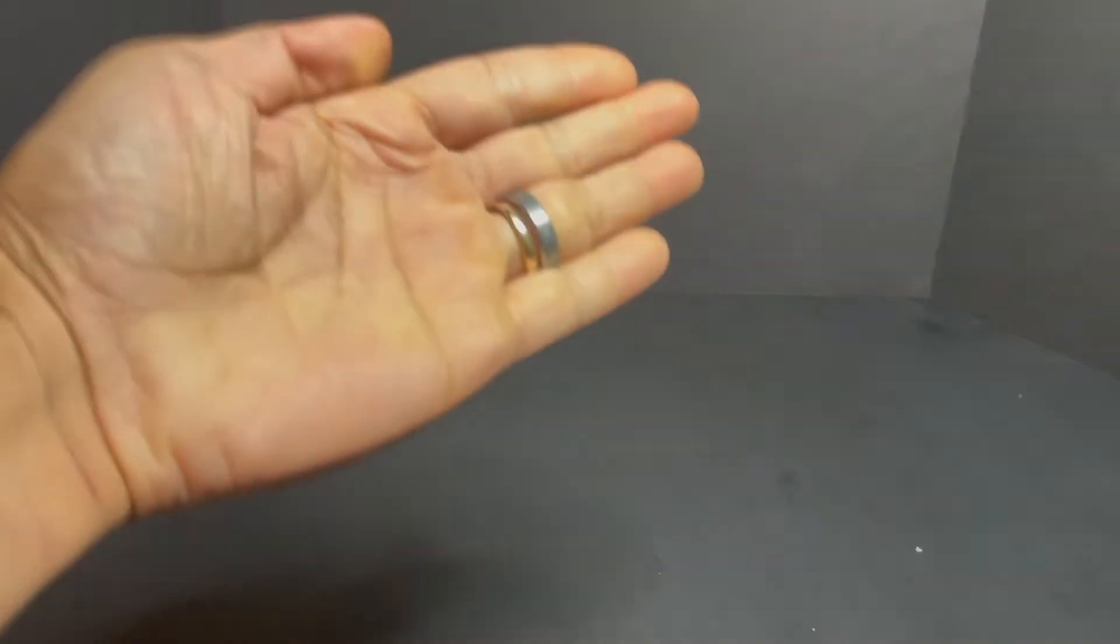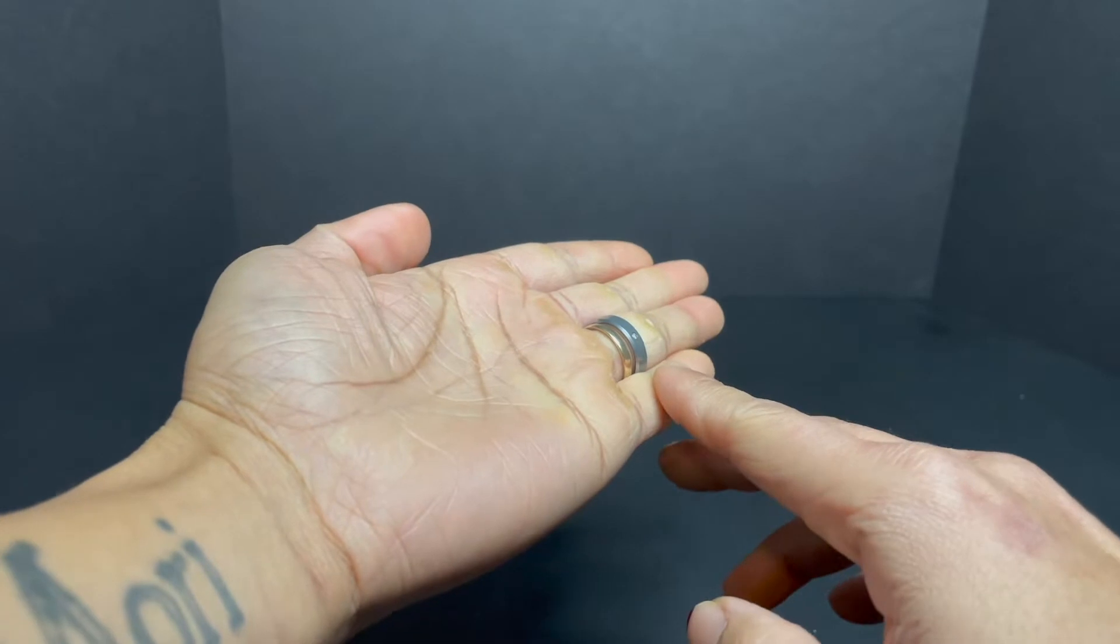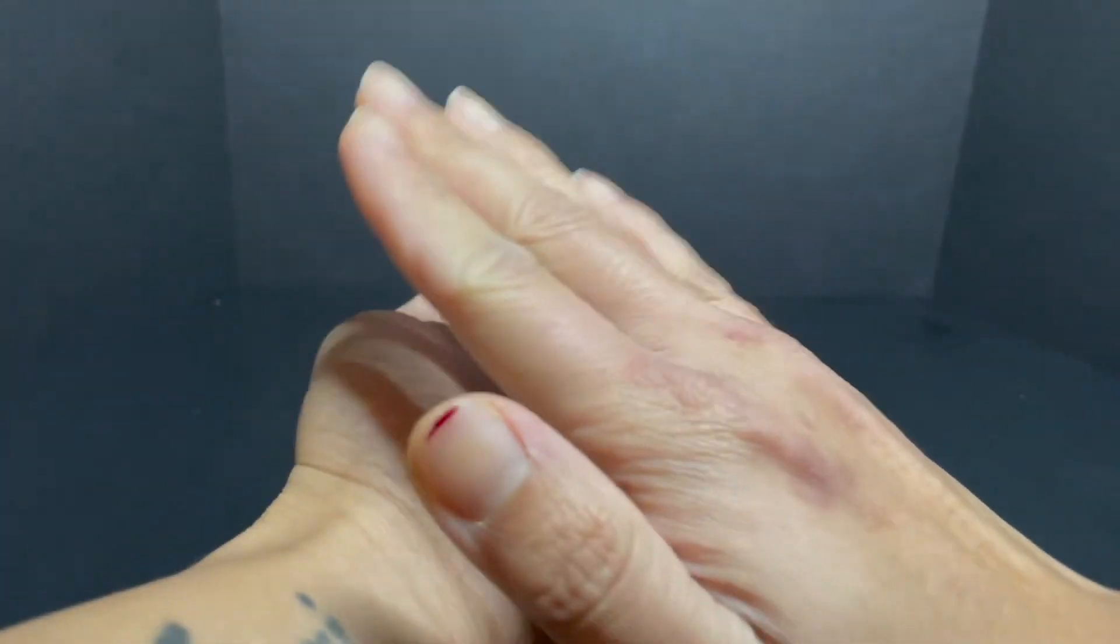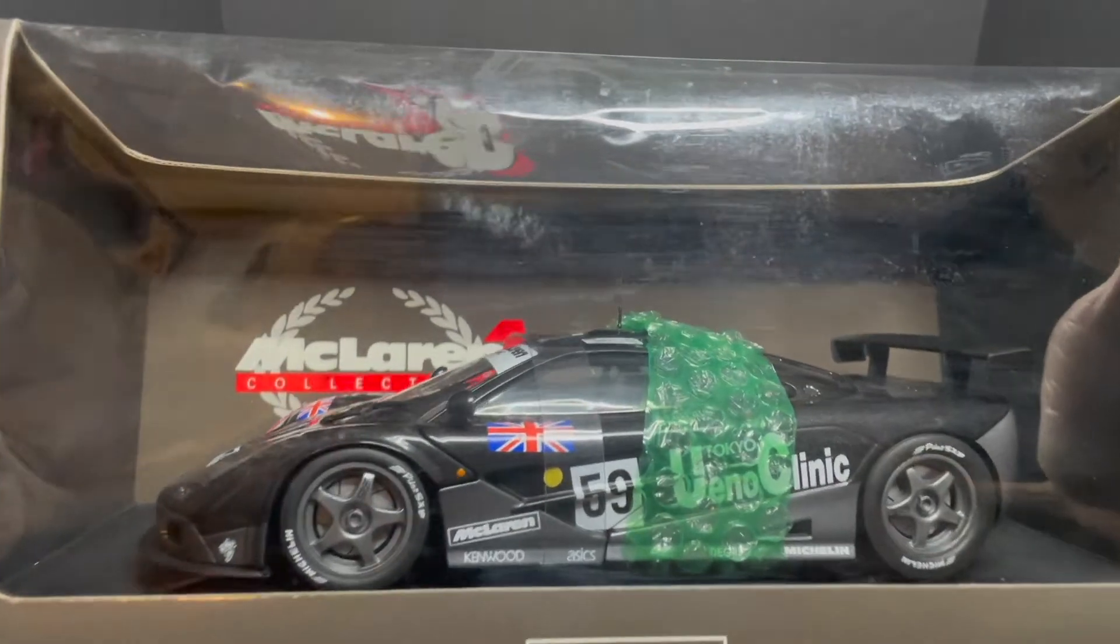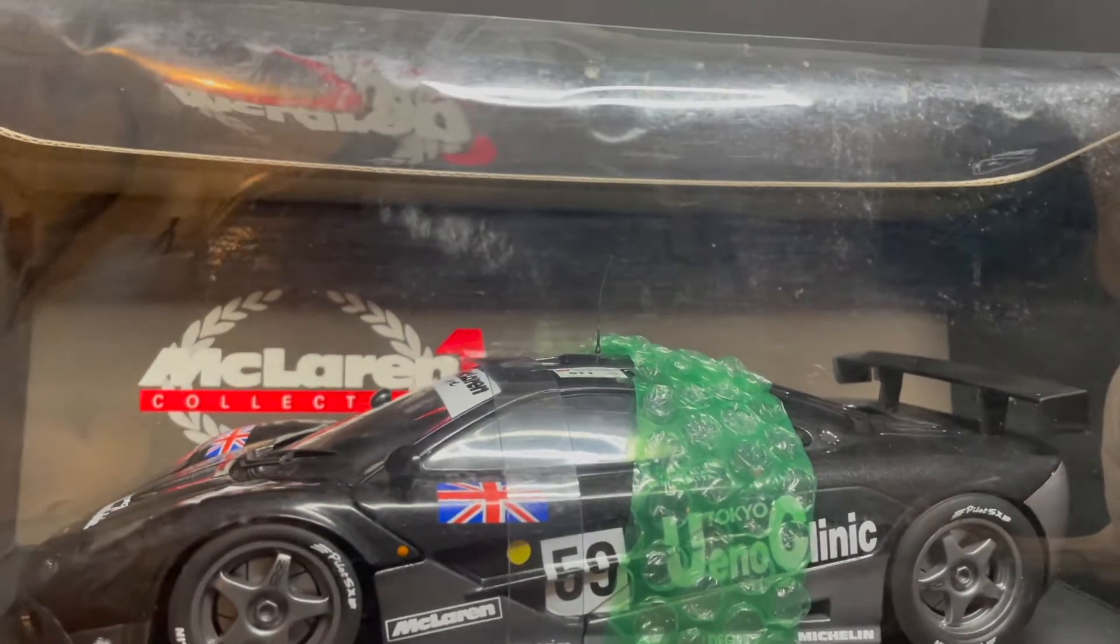Instead of just bubble wrapping it like this, to make sure it's intact, I would put a piece of cardboard, then the antenna, and then bubble wrap that. But if it's fixed, like this model where the antenna is fixed and you can't remove it, that's going to be a problem.